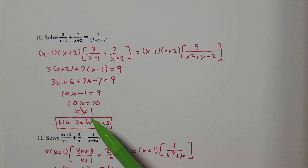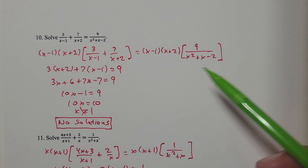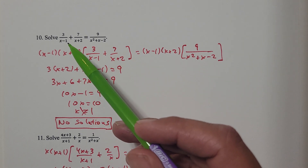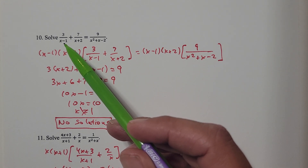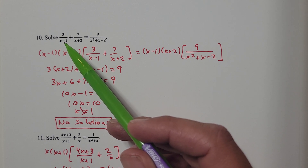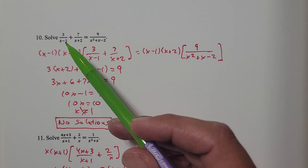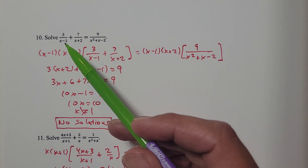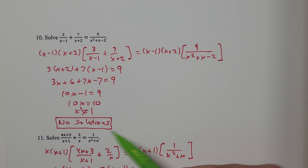I need to check that. If I plug 1 back into the original equation, there's a problem with the first term — I'd be dividing by 0. So 1 is an extraneous solution; throw that away. That was the only possibility and it didn't work out, so there are no solutions to this equation.